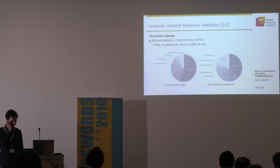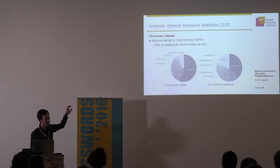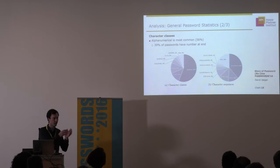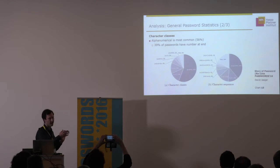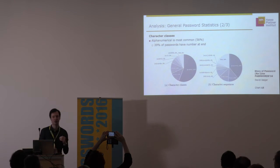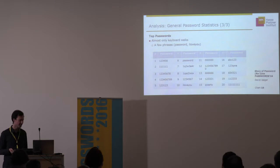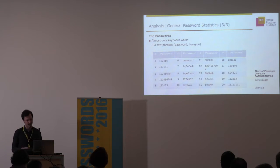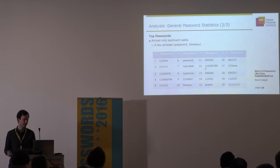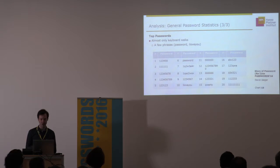For character distribution, 56% of passwords are alphanumeric. On the left you see which character classes are included, on the right which sequences appear: 39% of all passwords are letters followed by digits — the classic 'password1' or 'password123' pattern. Looking at top passwords, many are keyboard walks, which are easy to trace on a keyboard, plus common phrases like 'password' and 'I love you.'